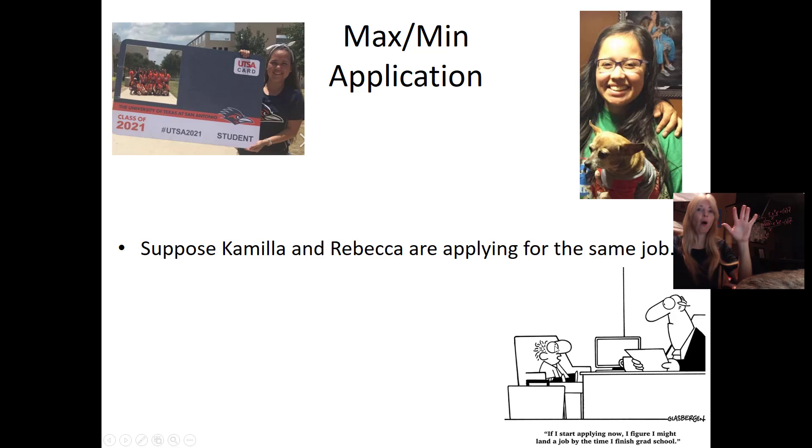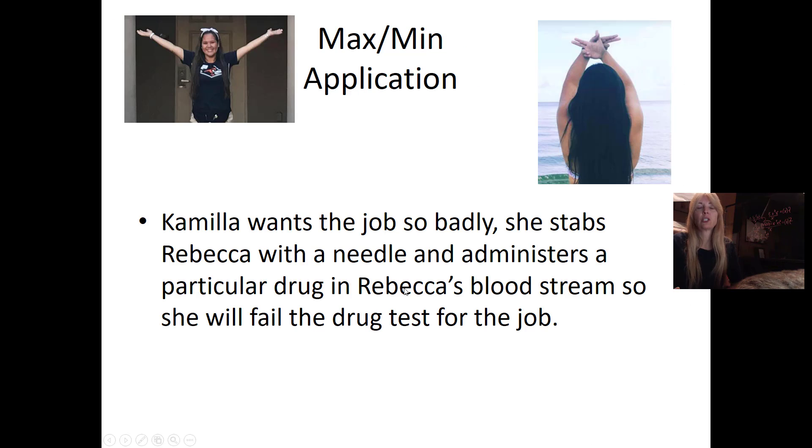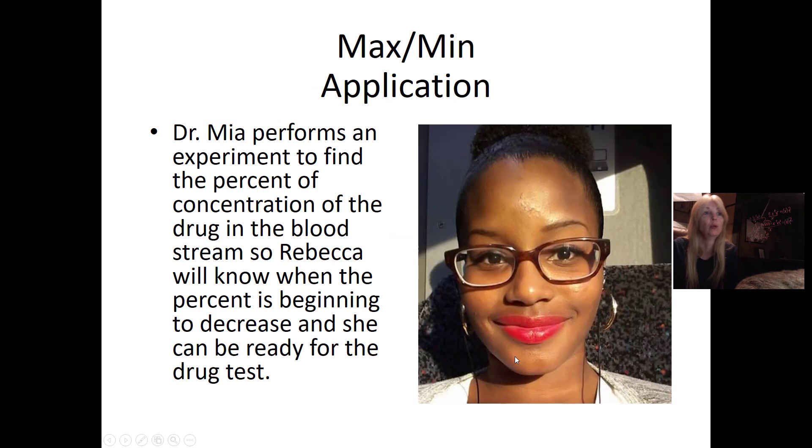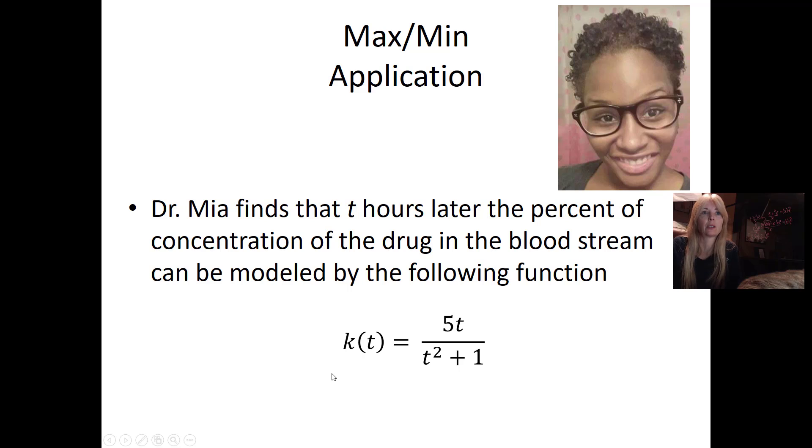Now the point. Suppose Camilla and Rebecca are applying for the same job. Camilla wants the job so badly she stabs Rebecca with a needle and administers a particular drug in Rebecca's bloodstream. Dr. Mia performs an experiment to find the percent of concentration of drug in the bloodstream so Rebecca will know when the percent is beginning to decrease. Dr. Mia finds that t hours later, the percent of concentration of drug in the bloodstream can be modeled by this function.